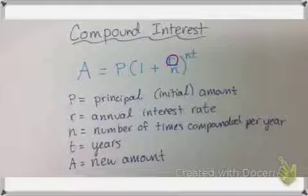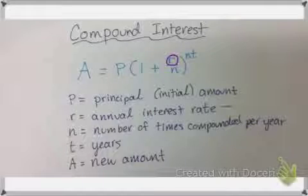R is the annual interest rate, which will be given to you usually as a percent. So you need to make sure to change it to a decimal.